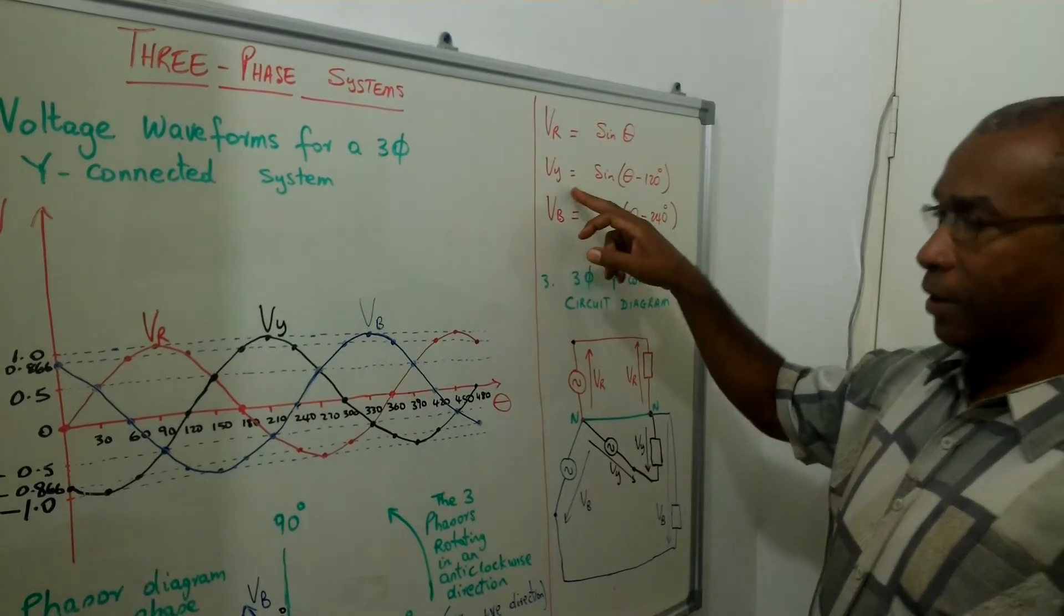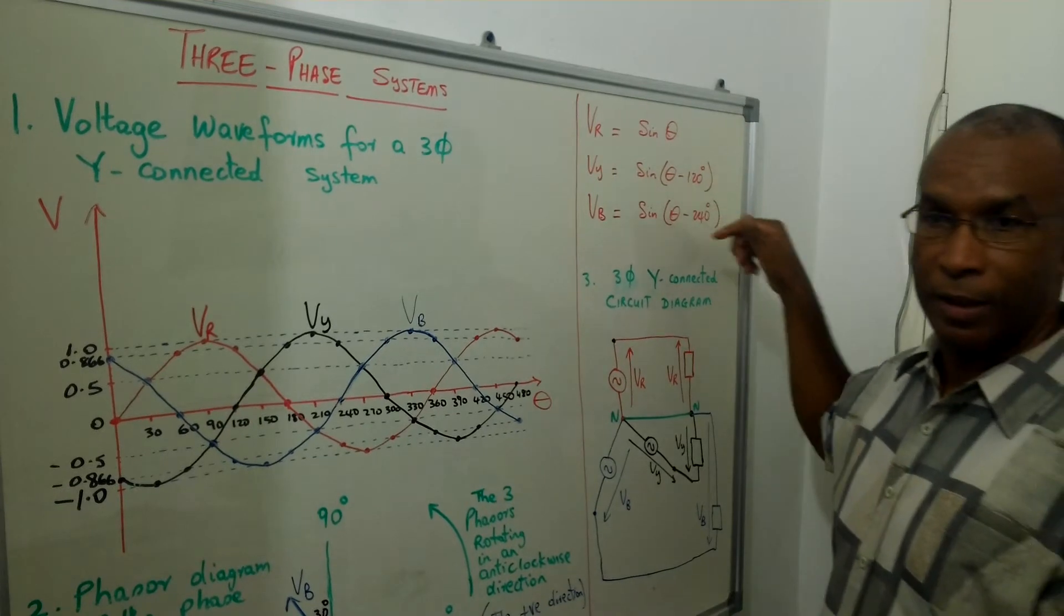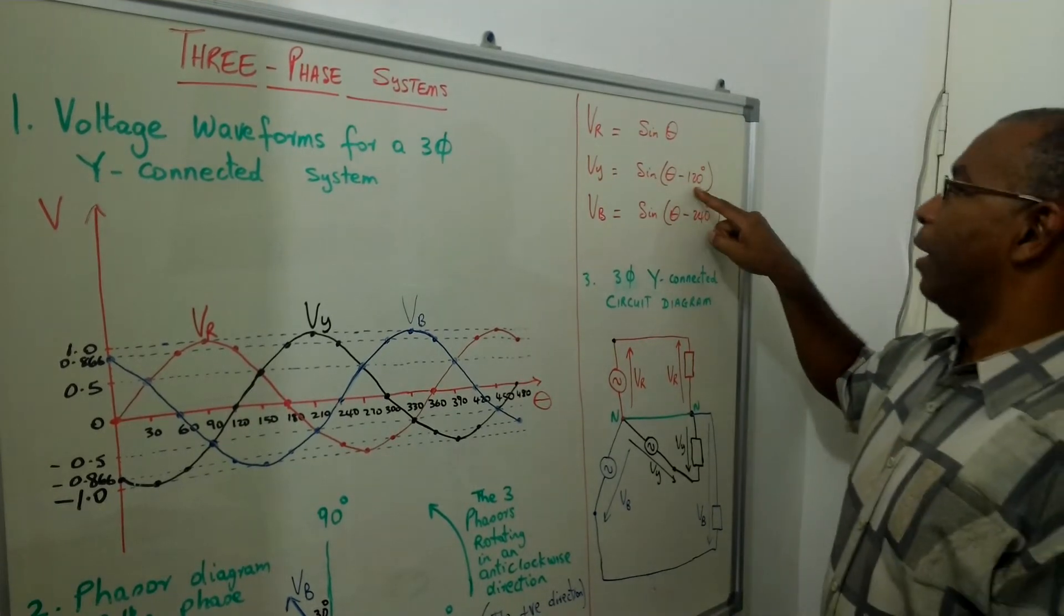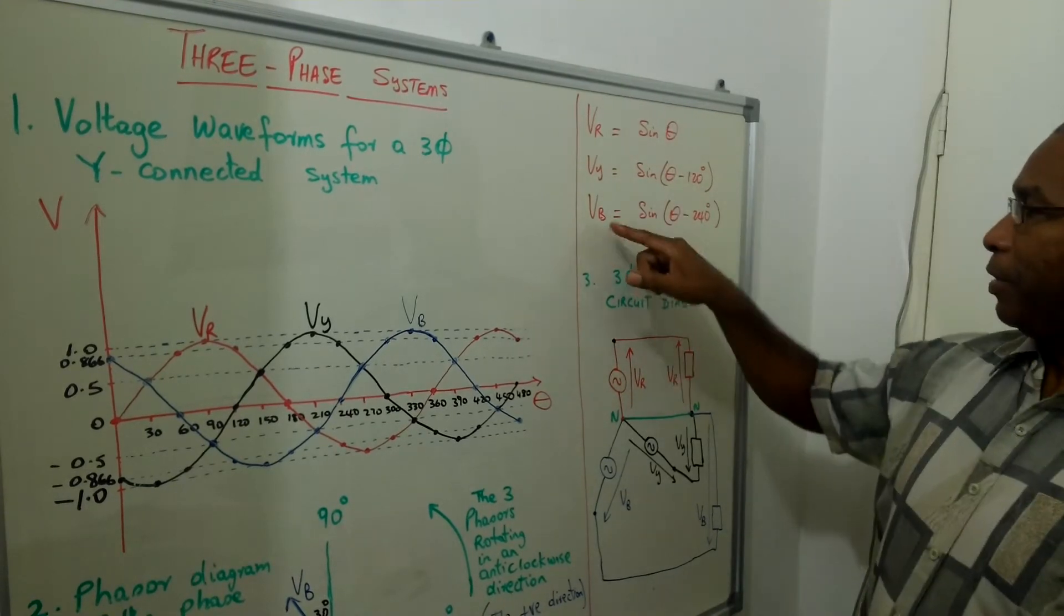The yellow phase, the voltage in the yellow phase is represented by sine theta minus 120, which means that VY is lagging VR by 120 degrees.